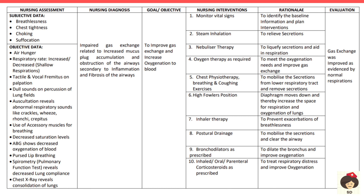The third diagnosis is impaired gas exchange, related to increased mucus plug accumulation and airway obstruction secondary to inflammation and fibrosis. Gas exchange occurs when oxygen moves from alveoli to capillaries and carbon dioxide moves from capillaries to alveoli. When diffusion fails due to alveolar problems or capillary obstruction preventing CO2 elimination, the patient has impaired gas exchange. Subjective data: breathlessness, chest tightness, choking, suffocation, and air hunger — the patient feels they cannot get oxygen and are about to die.